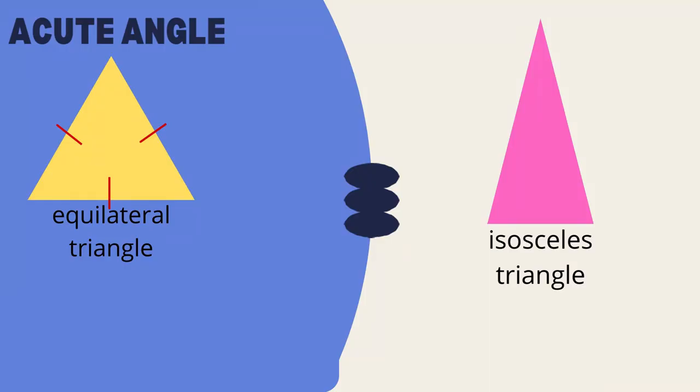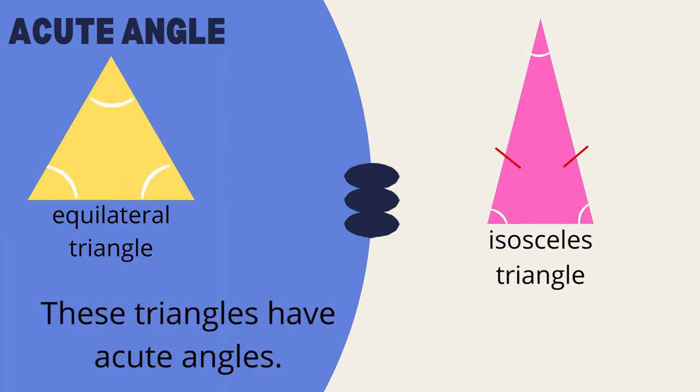Look at this isosceles triangle. The red marks here show that two sides are equal length. These triangles have acute angles.